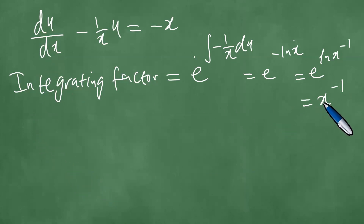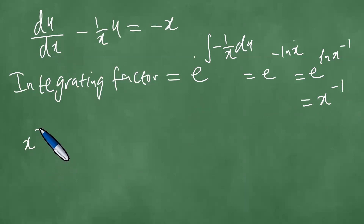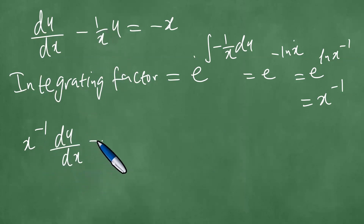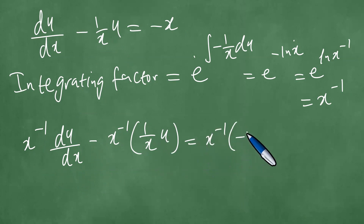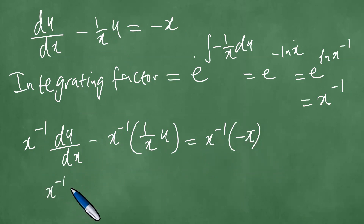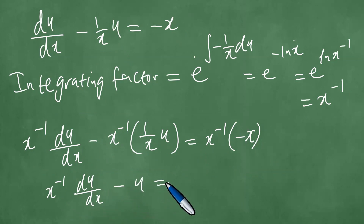We take x to the power minus 1 and multiply both sides. Multiplying each term gives x to the minus 1 du/dx. We also multiply the second term 1 over x times u by x to the minus 1, and multiply the right-hand side minus x by x to the minus 1.